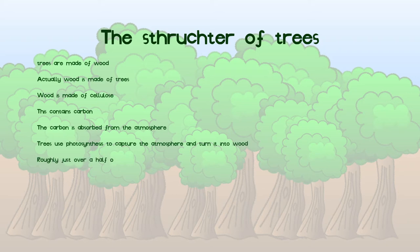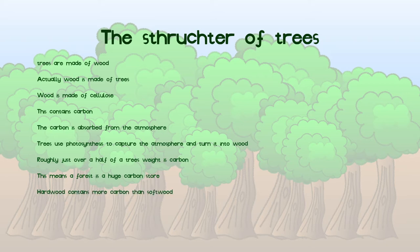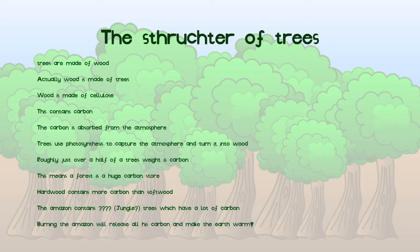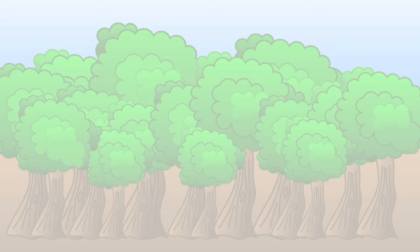I have also learned over half of the weight of a tree is carbon. This means that a forest is a very large store of carbon atoms. Hardwood contains more carbon than softwood. How interesting. I do not know what trees the Amazon rainforest has, however I can confidently say it has a lot of carbon. If we are foolish and burn down the Amazon then the carbon will be released and this will make the earth very warm. How foolish.